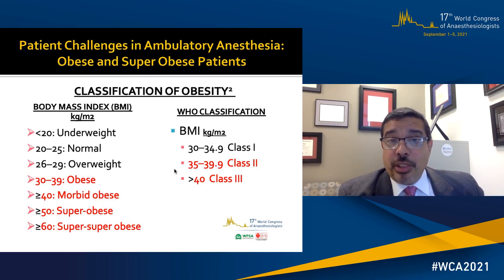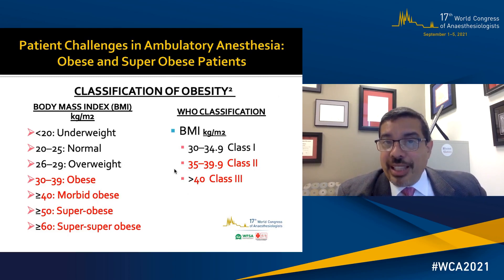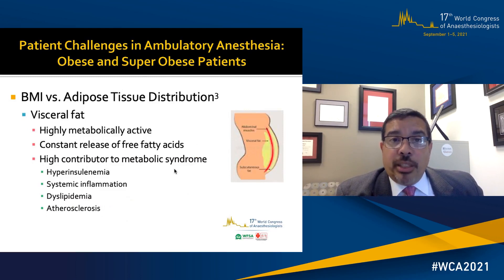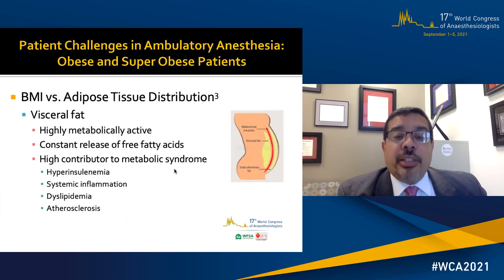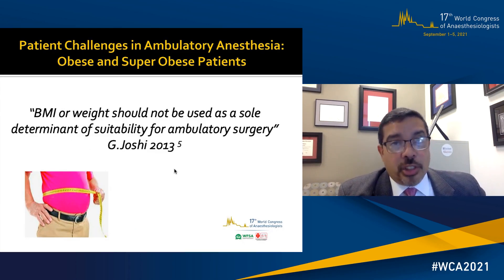With respect to the classification of obesity according to Body Mass Index, anything over 30 is considered obese, over 40 morbidly obese, over 50 super obese, and over 60 the super-super obese. According to the WHO classification, there are three classes; class 2 involves a BMI of 35 to 39.9, and class 3 a BMI over 40. We know that BMI does not tell the whole story — the distribution of fat about the body matters, specifically visceral fat. Visceral fat is highly metabolically active, and these patients tend to be hyperinsulinemic, have systemic inflammation, and be dyslipidemic. As one of my mentors has said, BMI or weight should not be used as the sole determinant for suitability for ambulatory surgery, and I completely agree.